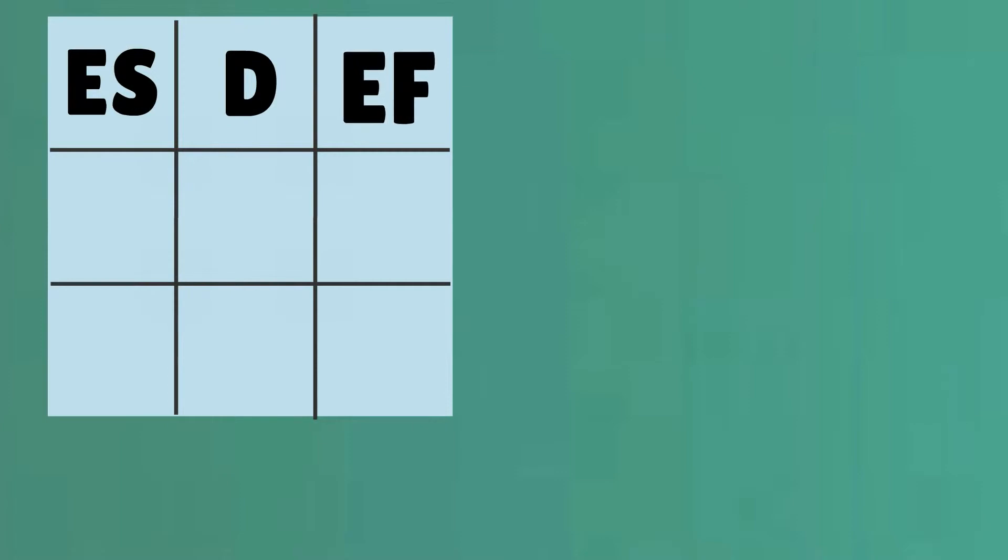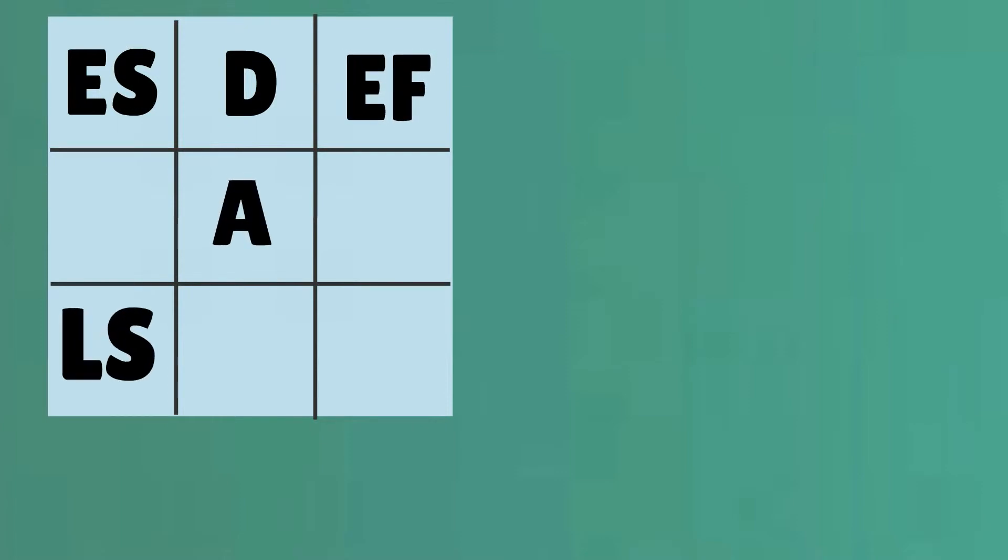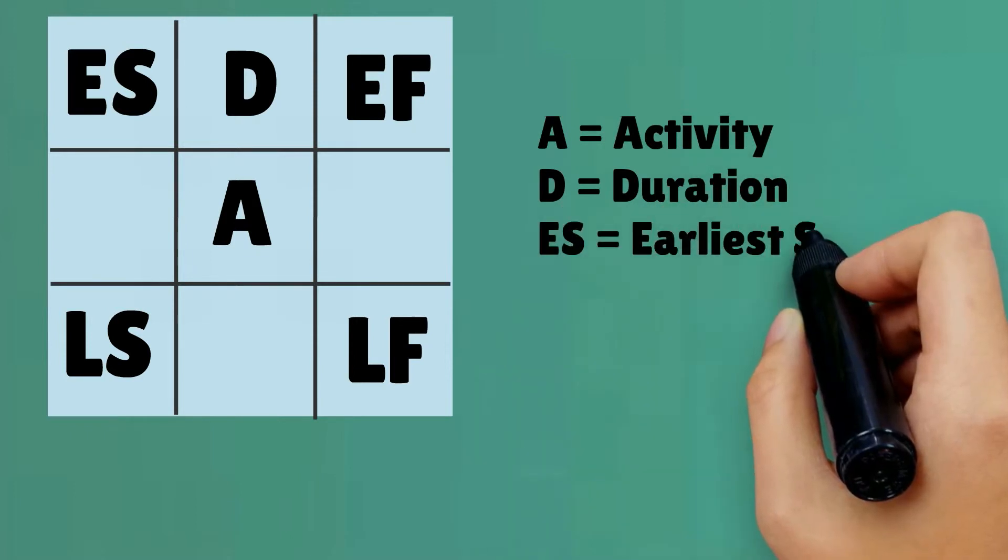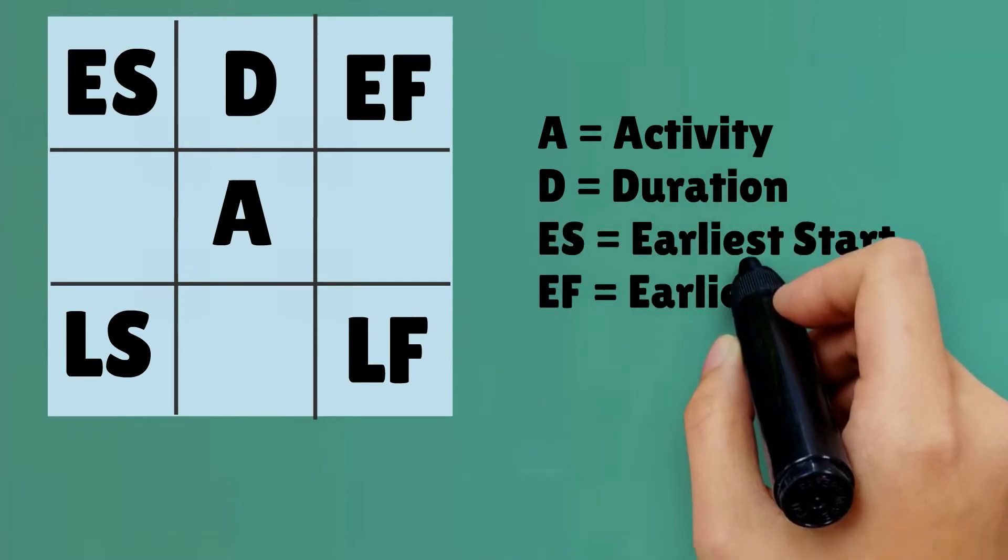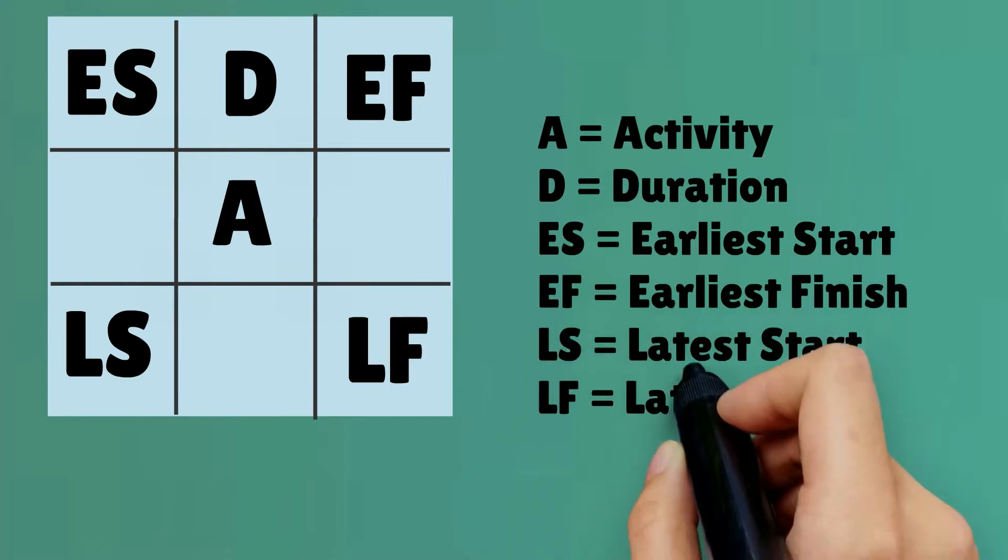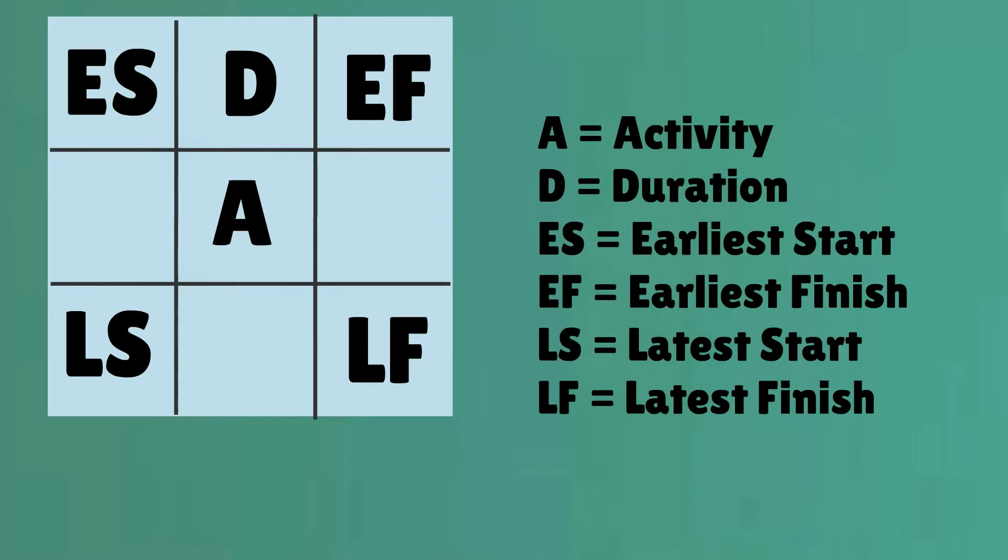The abbreviations in this cubicle mean A for the activity, D for the duration of the project, ES for the earliest possible start of the activity, EF for the earliest possible finish of the activity, LS for the latest possible start of the activity, and LF for the latest possible finish of the activity.